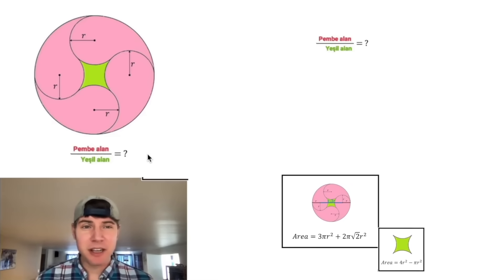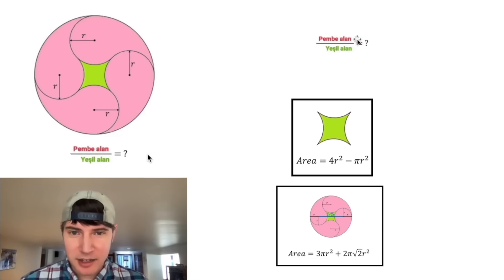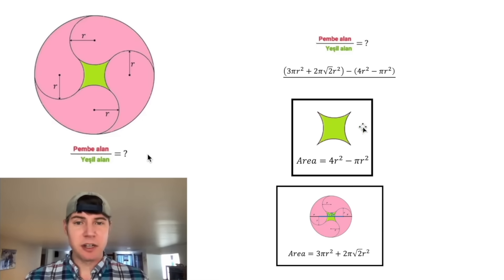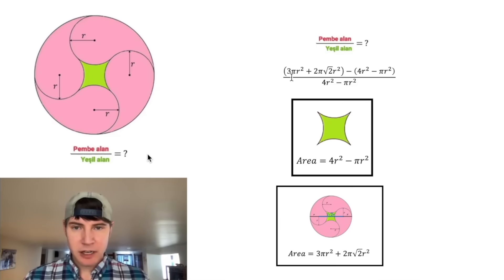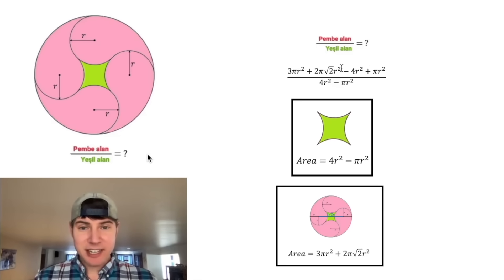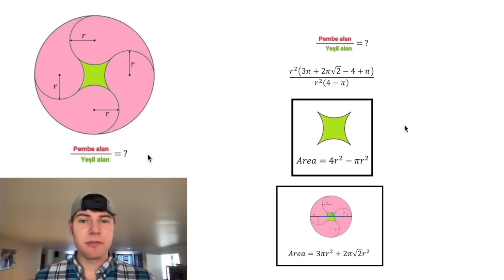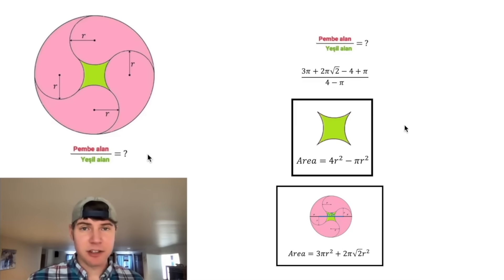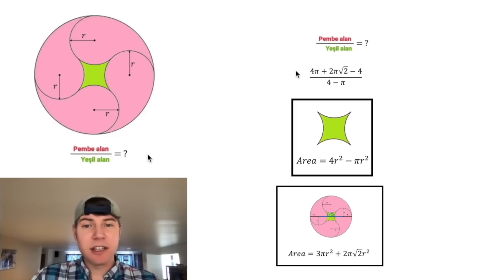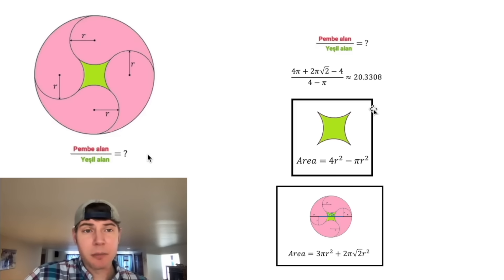We're trying to find the pink area divided by the green area. The pink area is this whole circle minus the green stuff, and the green area is just the green stuff. We can distribute the negative and all six terms have an R squared, so we factor it out and cancel those R squareds. On top, 3π and 1π become 4π, and now we are done. This is the exact value of the answer, which ends up being approximately 20.3308.